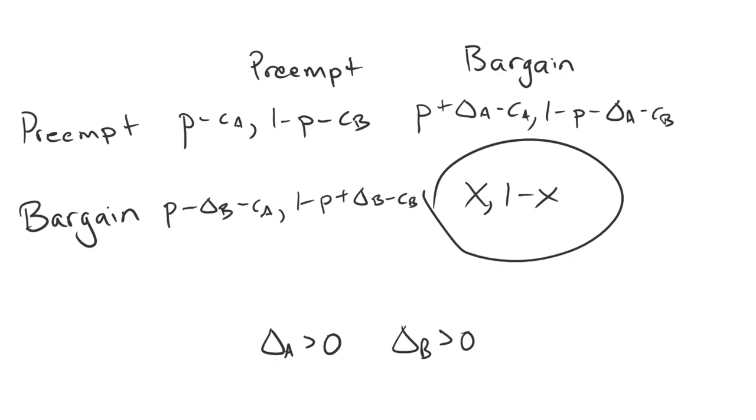If bargain-bargain is not a Nash equilibrium, well, the other three outcomes of this game are war, so we'll have war as a consequence. That will be the outcome of the game. We'll have some sort of fighting, and we'll have an explanation for war. Namely, it's the first strike advantages that are overriding the incentive to negotiate.